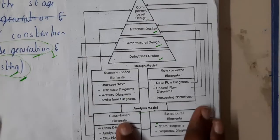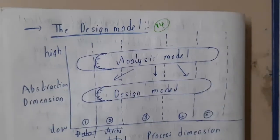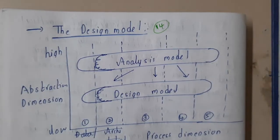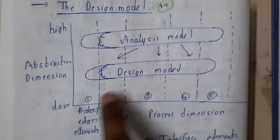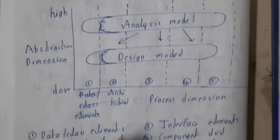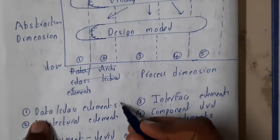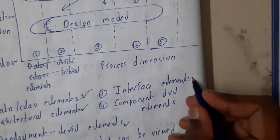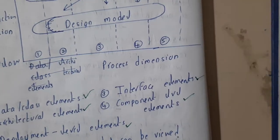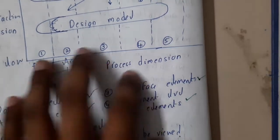This diagram - the same diagram you can just draw it in this way. It's a simple version basically. From analysis model we are converting it into design model, and design model will be having five things: data class elements, architecture elements, deployment elements, interface elements, and component level elements. These are all the elements that the design model will be having.